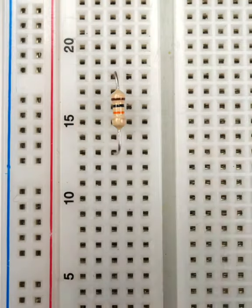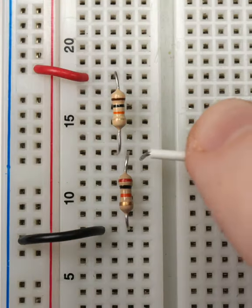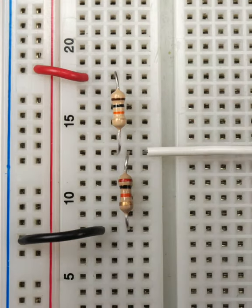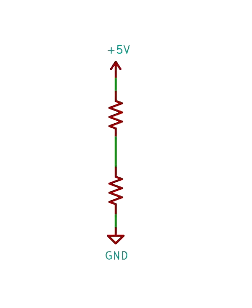In its most common form, the resistive divider, two resistors are connected in series between a voltage source and ground to create a reference voltage. The relationship between these resistor values determines that reference voltage available at the node between them.